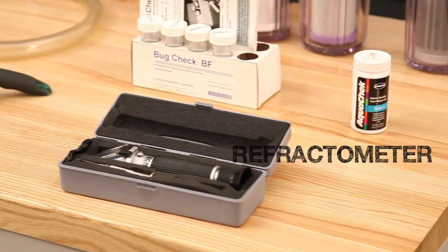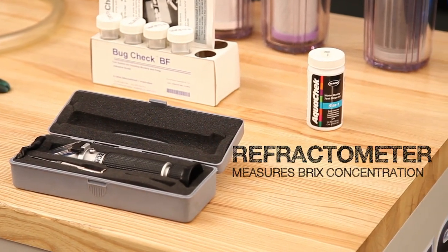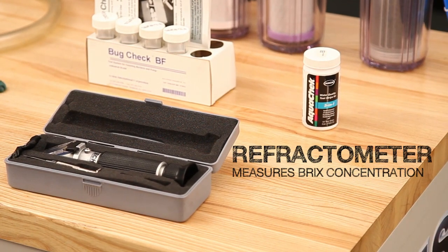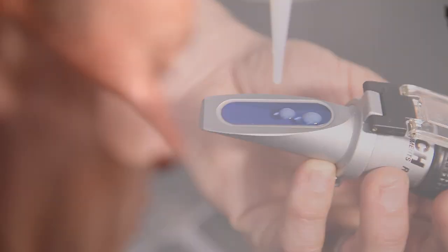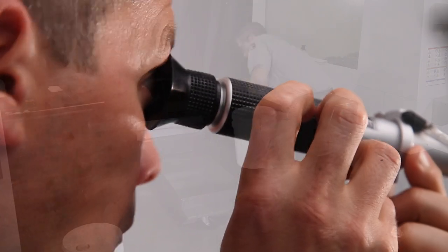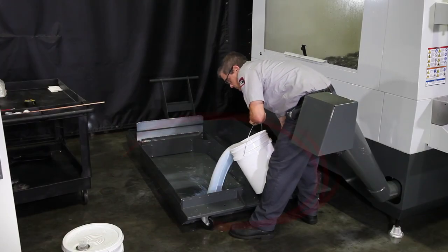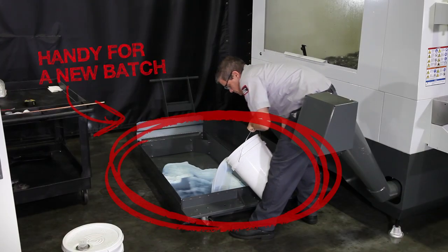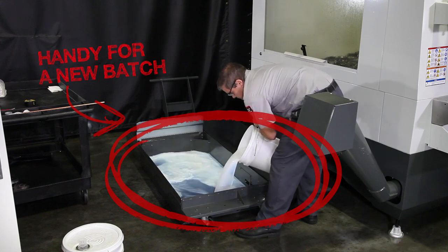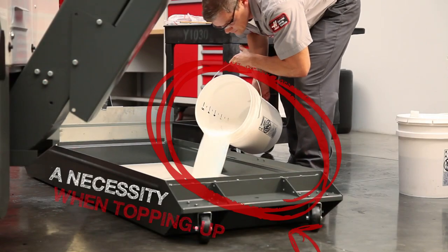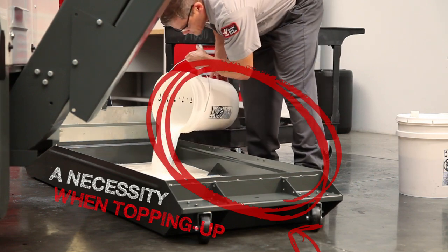We'll start off with the Refractometer. This is the most important tool you'll use for keeping your coolant working correctly. Its purpose is to measure the concentration of your coolant. They are handy when filling an empty tank with a new batch to verify the concentration. But a Refractometer is an absolute necessity when topping up a tank with coolant already in it.